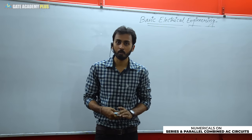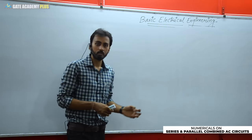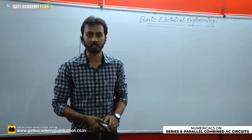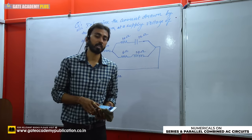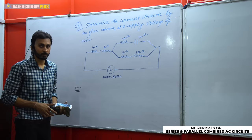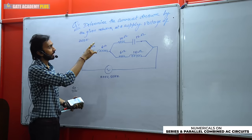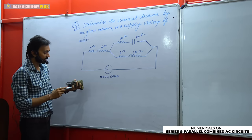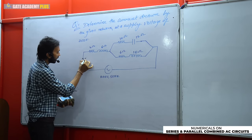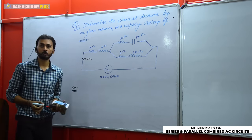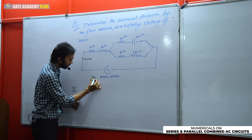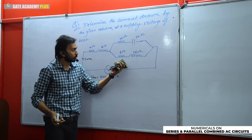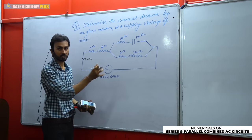I have a good question for you. I will write the question, read and understand it, and then look at the approach. In this series-parallel combined AC circuit question: if a supply voltage of 200 volts is provided to the given network, find the supply current IRMS value. Given: VRMS = 200 volts, frequency = 50 Hz, and three different branches connected, where two branches are in parallel and their combination is in series.